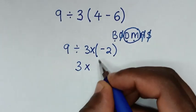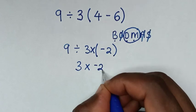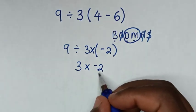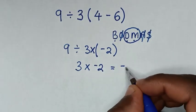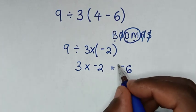Then 3 times negative 2. Now, 3 times negative 2 equals negative 6. Therefore, negative 6 is our final answer.